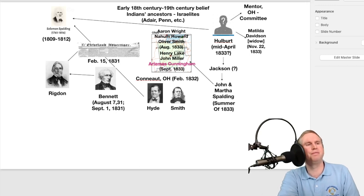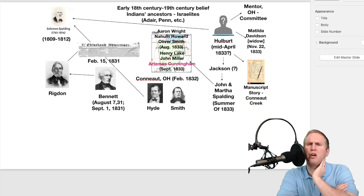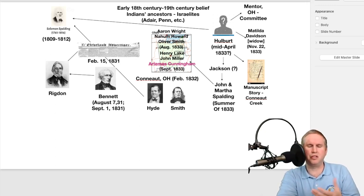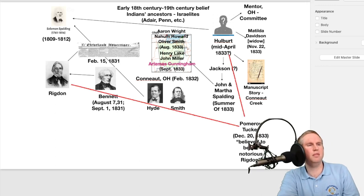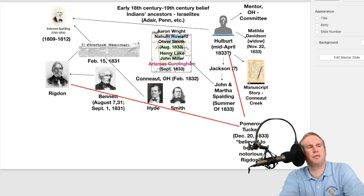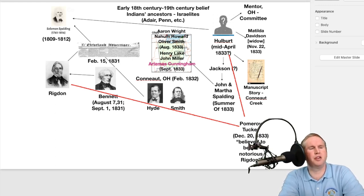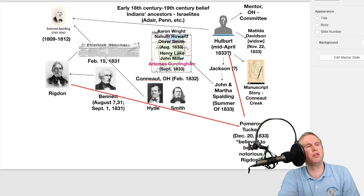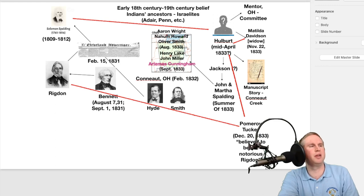Matilda Davidson told Holbert to go to Hartwick, New York, to open up a trunk that was stored there. He opened the trunk and found the manuscript called Manuscript Story, Conuet Creek. Interestingly, this is apparently where Holbert realized that Rigdon was somehow involved, because he must have heard from the widow that Rigdon was connected. Palmeiro Tucker wrote on December 20, 1833, that it was believed to be the notorious Rigdon. So Holbert must have heard of this connection from Matilda Davidson. This is where the connection between Solomon Spalding and Sidney Rigdon begins to emerge.